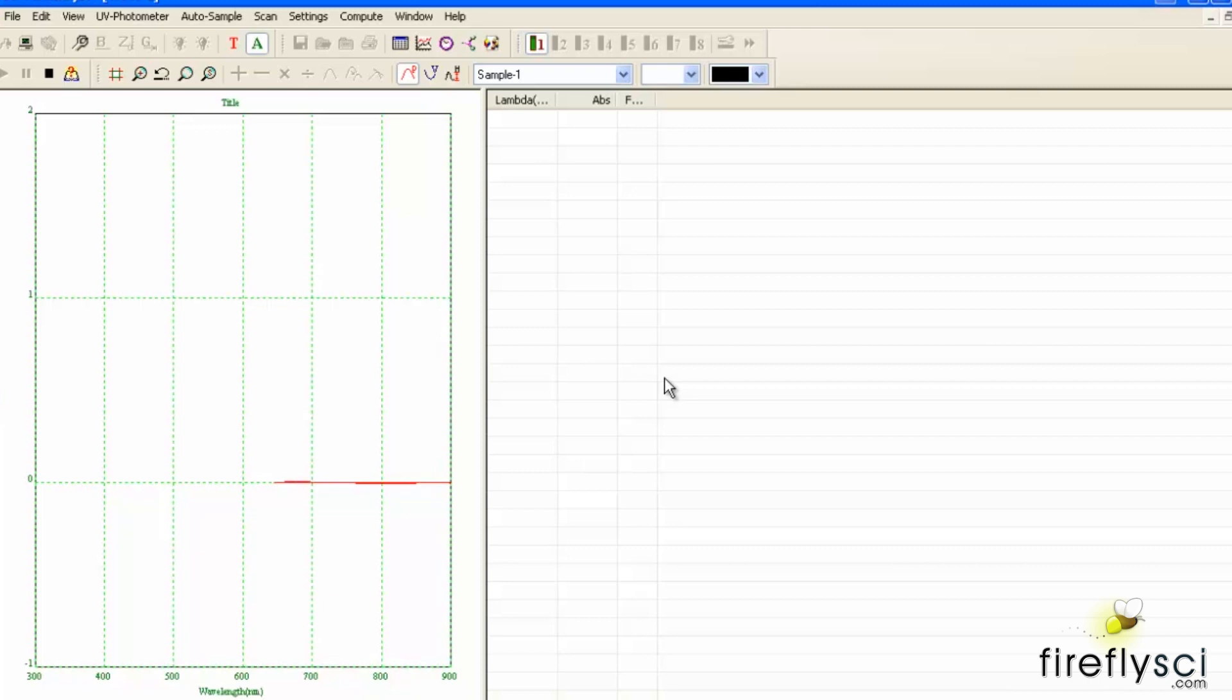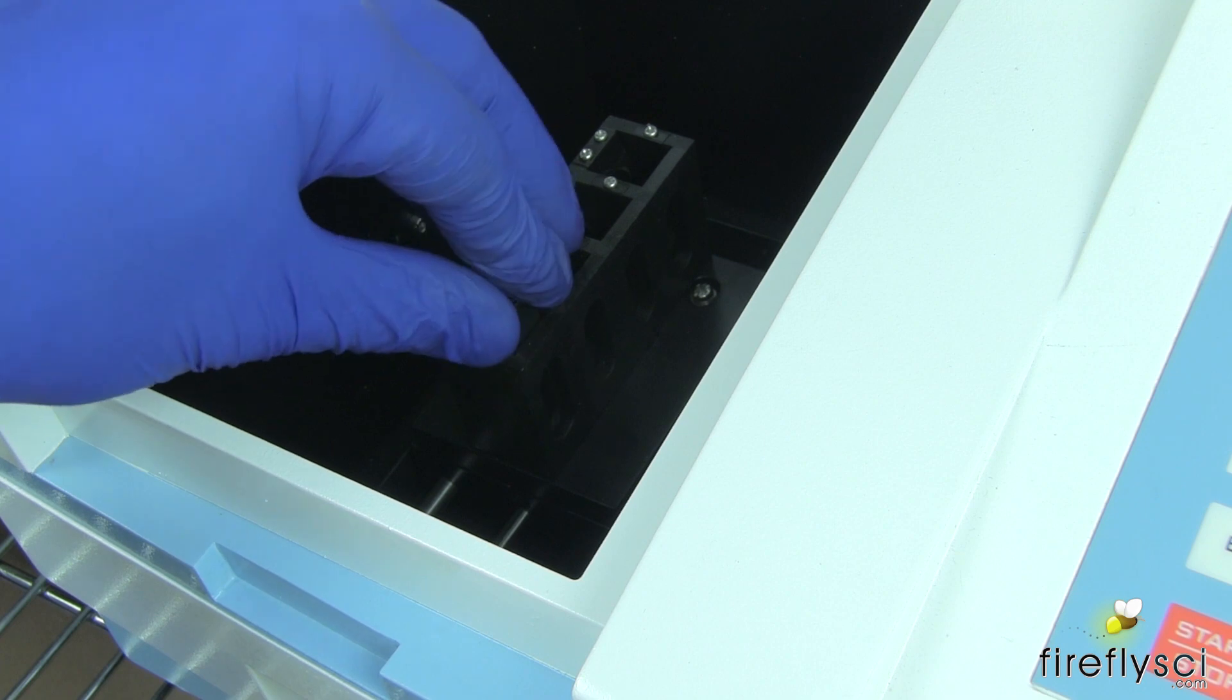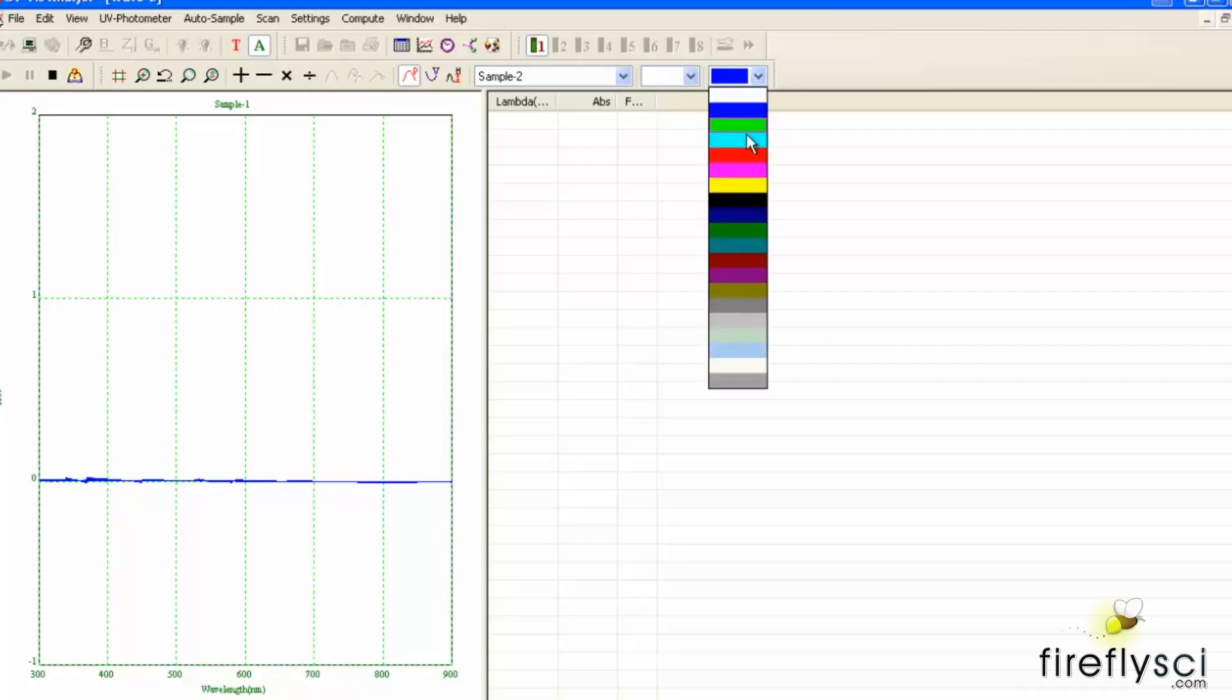Now we'll zero the machine with nothing in the cuvette holder. Once the machine is zeroed we can insert the WAV 7 filter. We'll start our program and see what peaks we get.